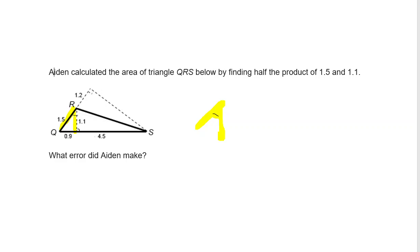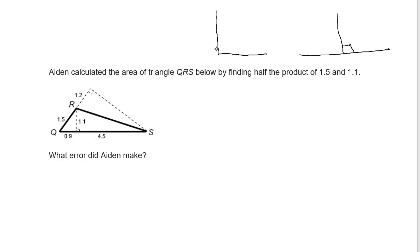Is that a right angle? No. Therefore, those are not the correct segments to use to calculate the area, because you have to use a base and a height that form a right angle. A right angle will be noted with this symbol, or they could tell you it's a right triangle — a right triangle makes a perfect corner, exactly 90 degrees. We can see that right angle symbol here, where they're using 1.1.